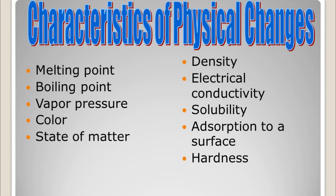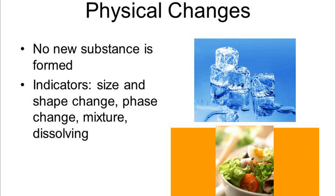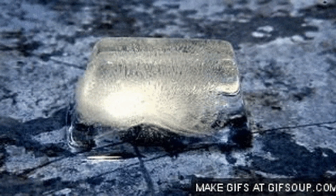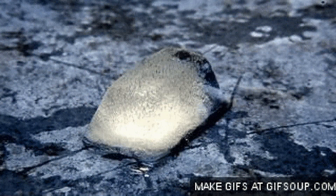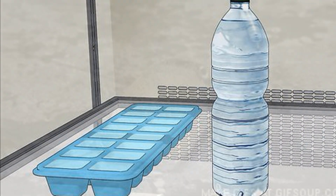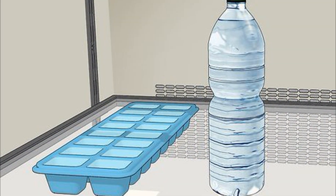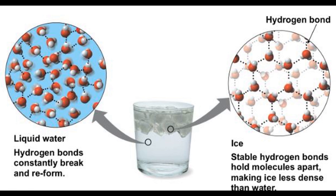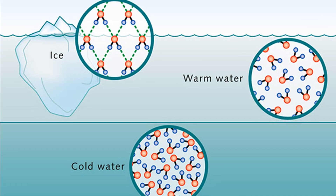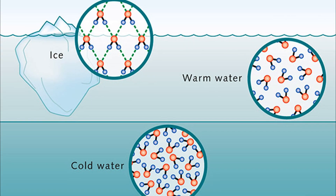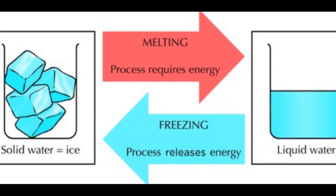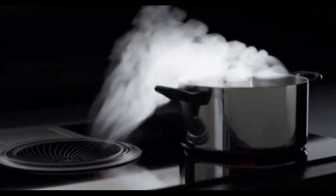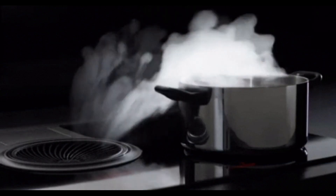Characteristics of a Physical Change. First, no new substance is formed. When a cube of ice is taken out of the refrigerator, it melts into water. If this water is kept back in the refrigerator, it refreezes into ice. This indicates that the properties of water and ice are the same — their chemical composition is the same; they both have the formula H₂O. On melting of ice or on freezing of water, no new substance is formed; only the physical state of the substance changes.